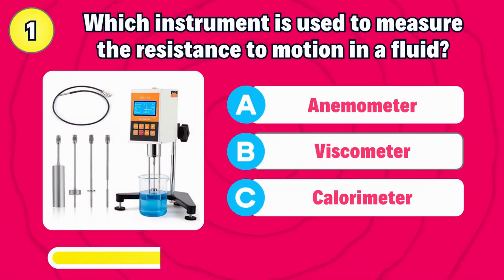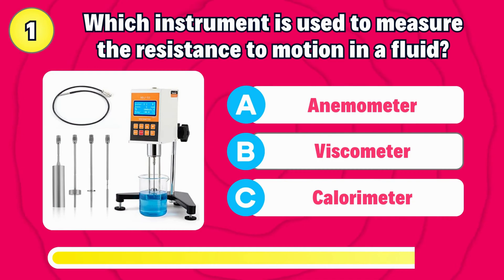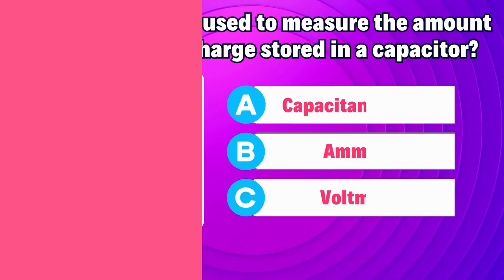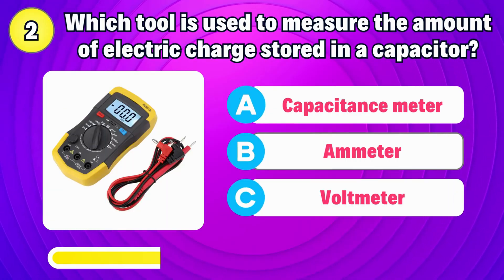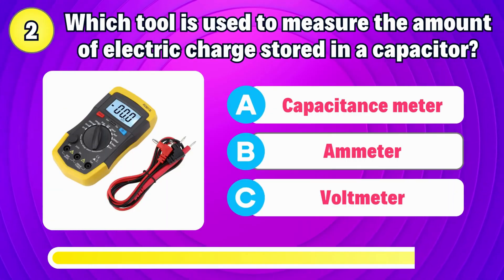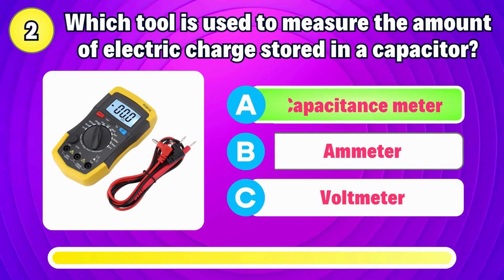Which instrument is used to measure the resistance to motion in a fluid, like air or water? Correct, it's viscometer. Which tool is used to measure the amount of electric charge stored in a capacitor? Right, it's capacitance meter.